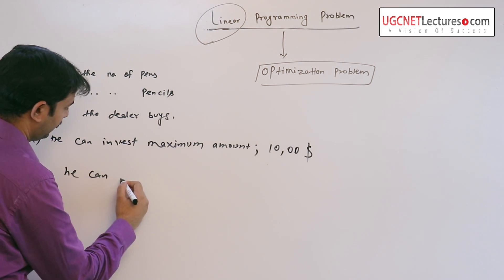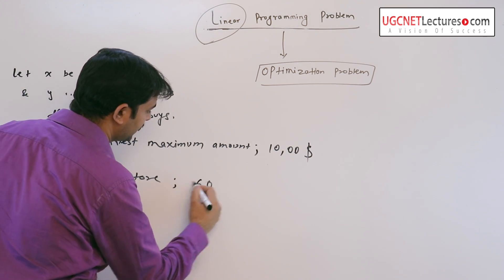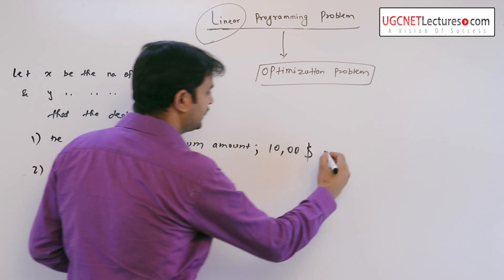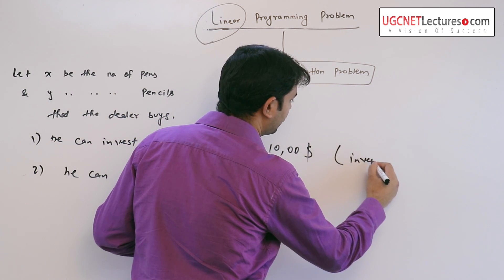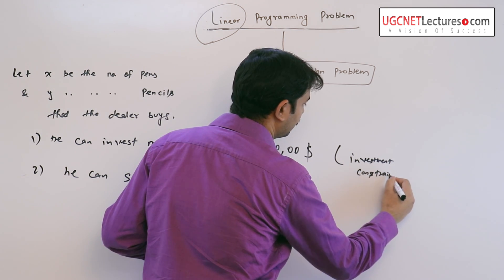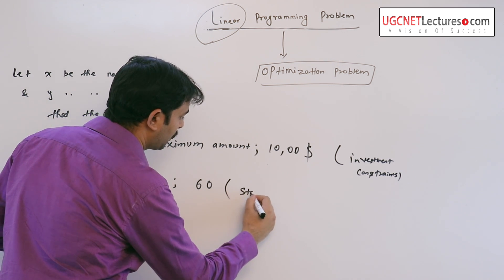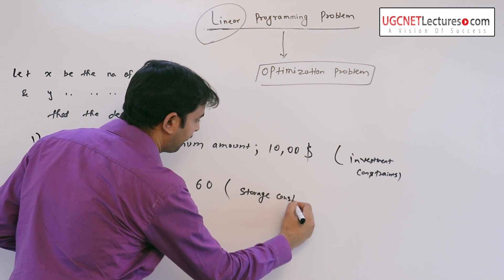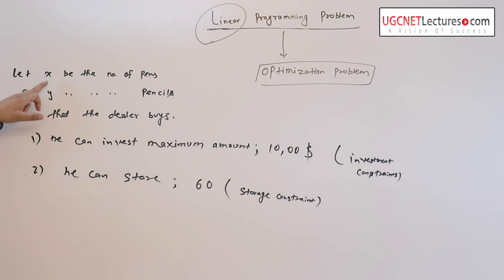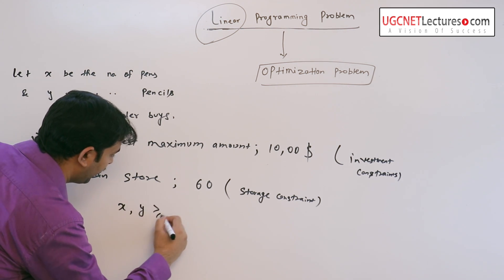The first constraint you can say it is his investment constraint and the second one can say the storage constraint. Obviously x and y are non-negative.